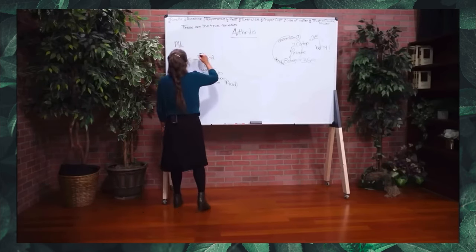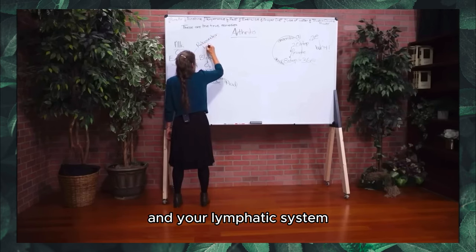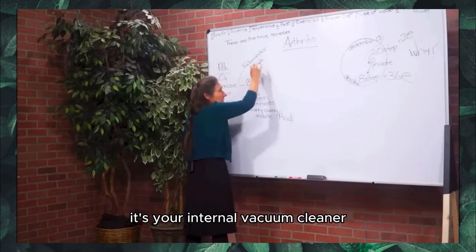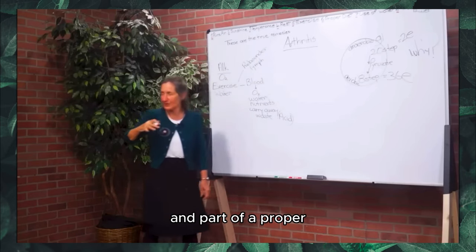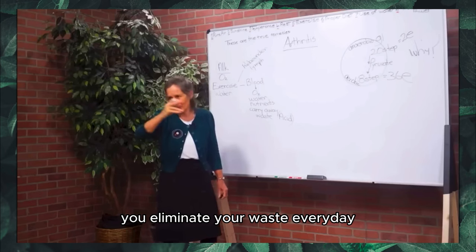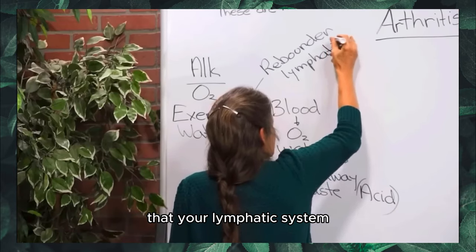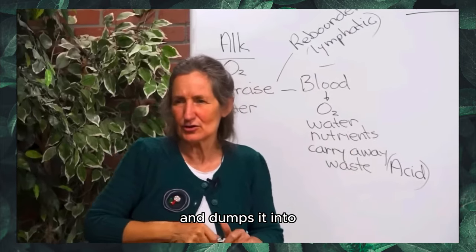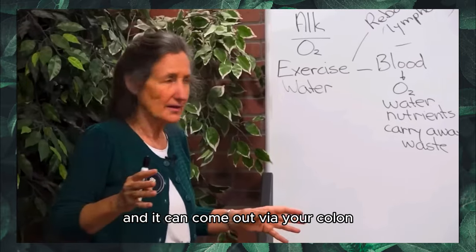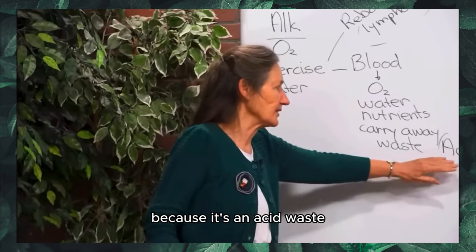The rebounder stimulates your lymphatic system, and your lymphatic system stimulates the removal of waste from the body. The lymphatic system is your internal vacuum cleaner. Part of a properly functioning body is eliminating waste. Your lymphatic system sweeps away waste from the tissues and it can be eliminated via your skin in perspiration, urinated out, or come out via your colon. We've got to get that acid waste out.